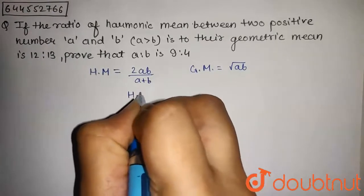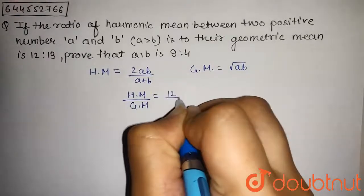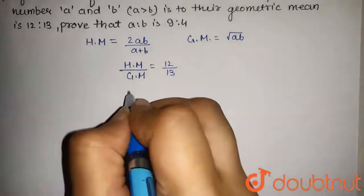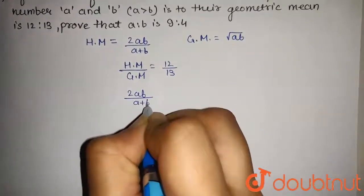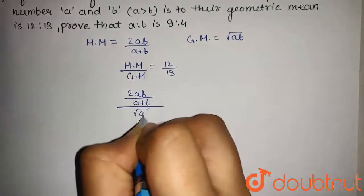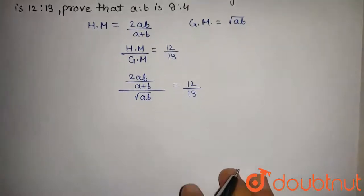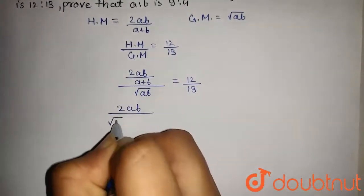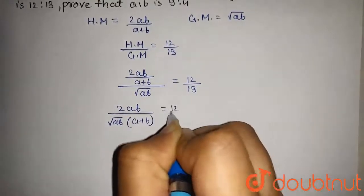As given in the question, HM upon GM is equal to 12 by 13. Putting values of HM and GM, we get 2AB upon A plus B upon under root AB is equal to 12 by 13, or this will be 2AB upon under root AB into A plus B is equal to 12 by 13.